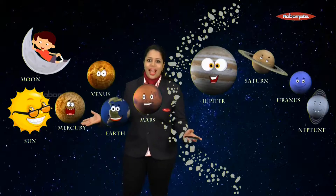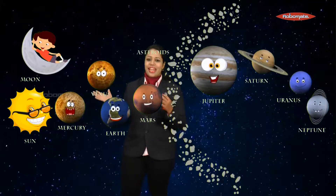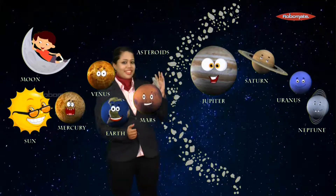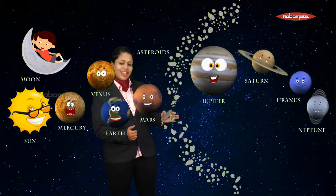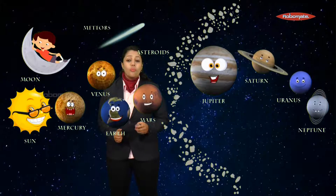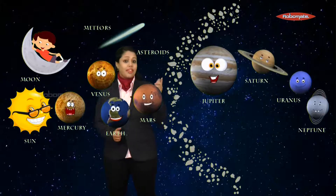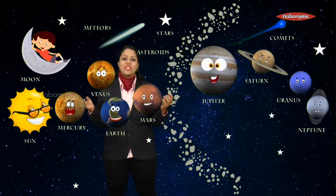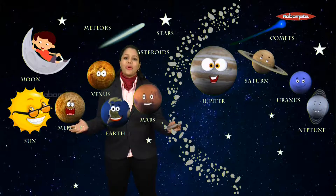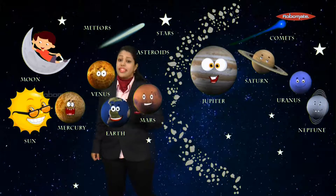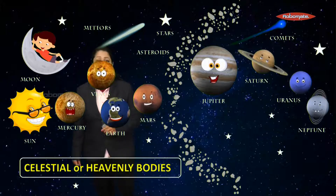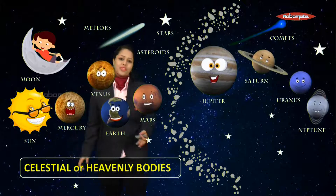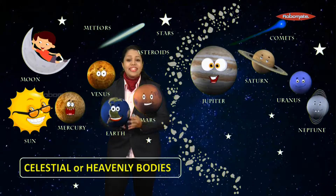The next component in our solar system is the Moon, then we have the eight planets. After that we have the asteroid belt, then meteors, then comets, and finally we have stars twinkling. These are the different components of our solar system, and they are called celestial or heavenly bodies of the solar system.